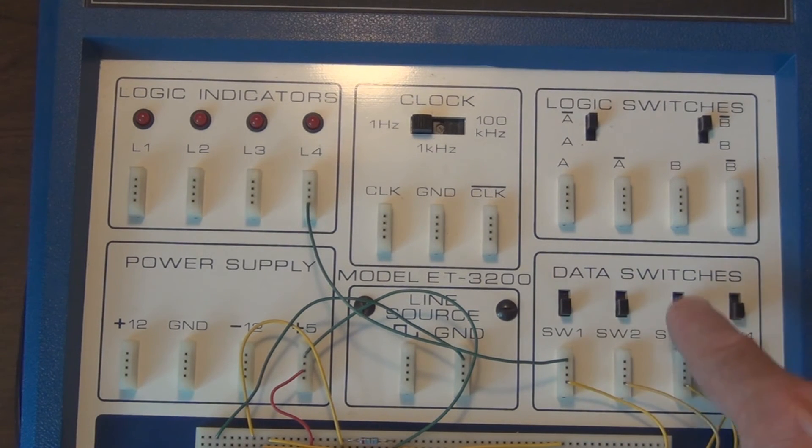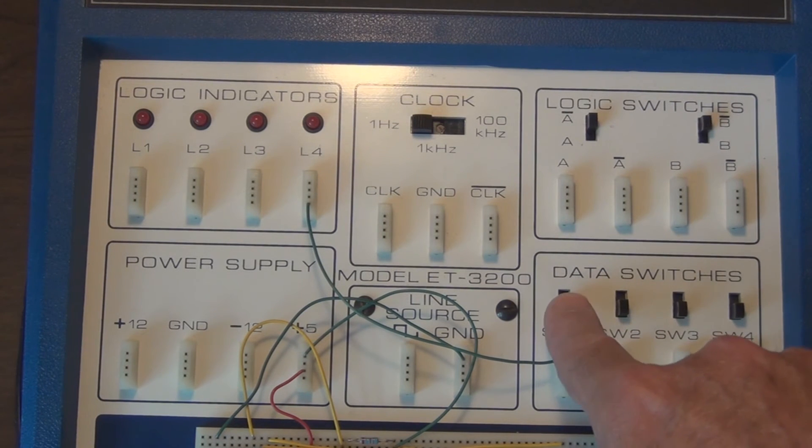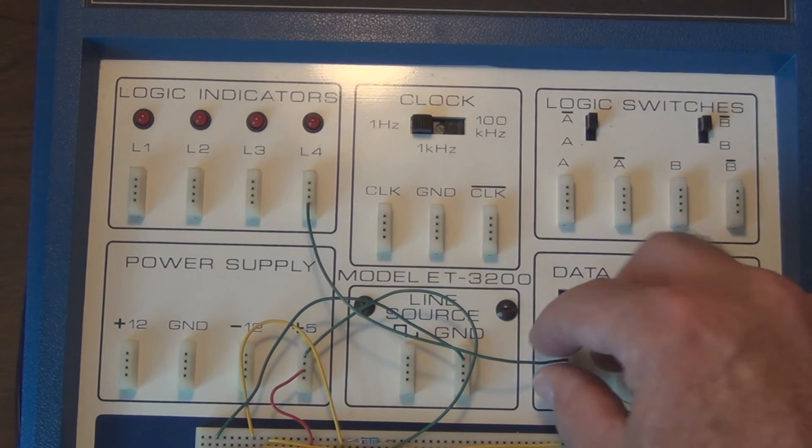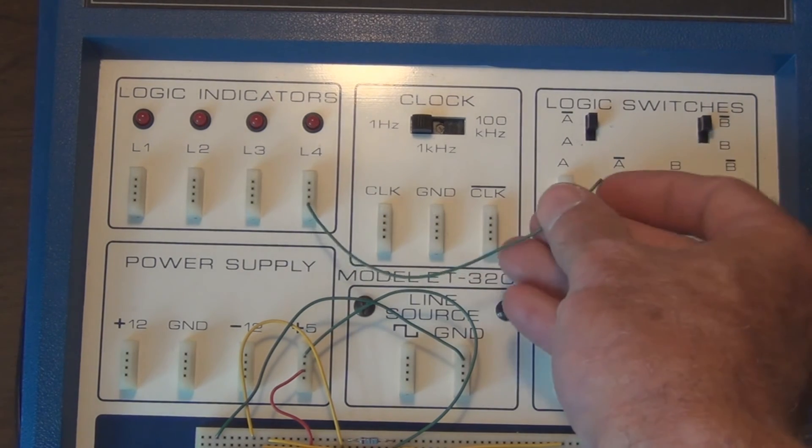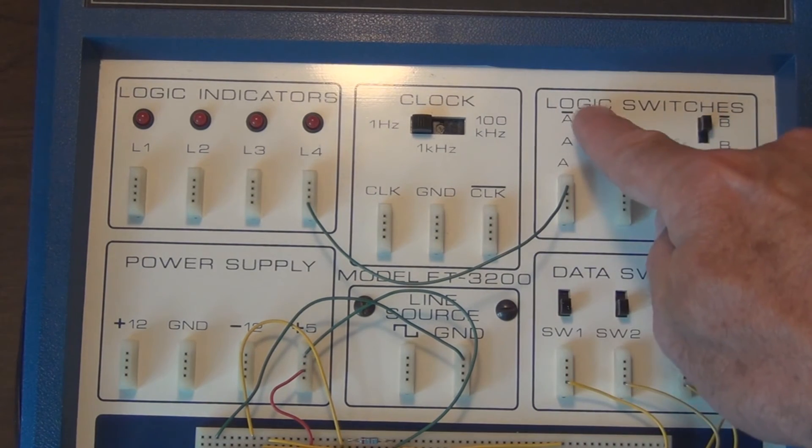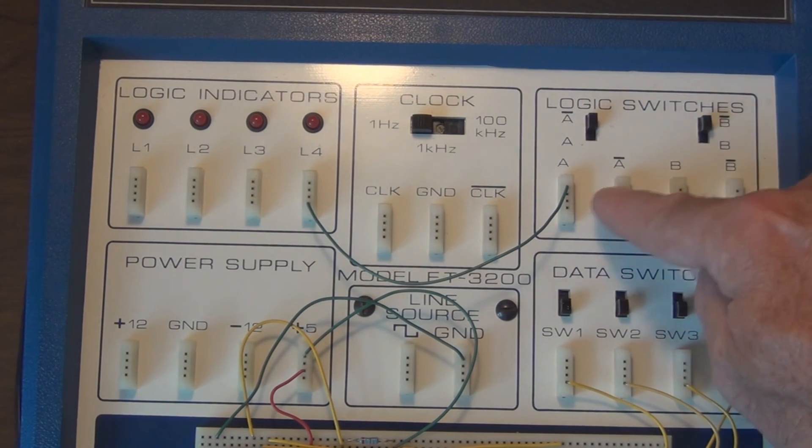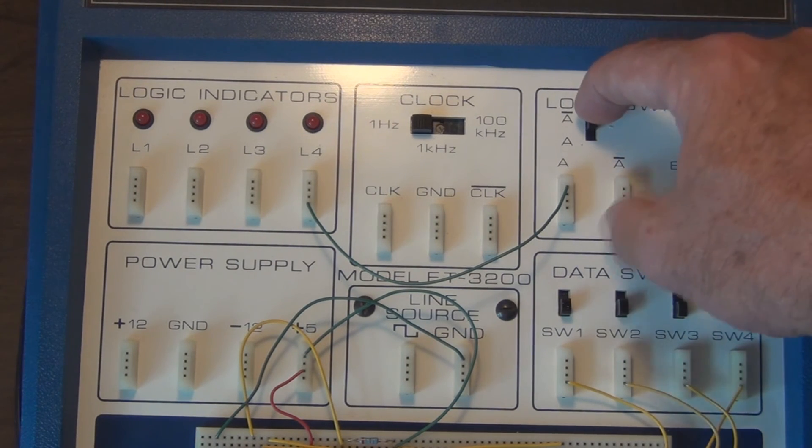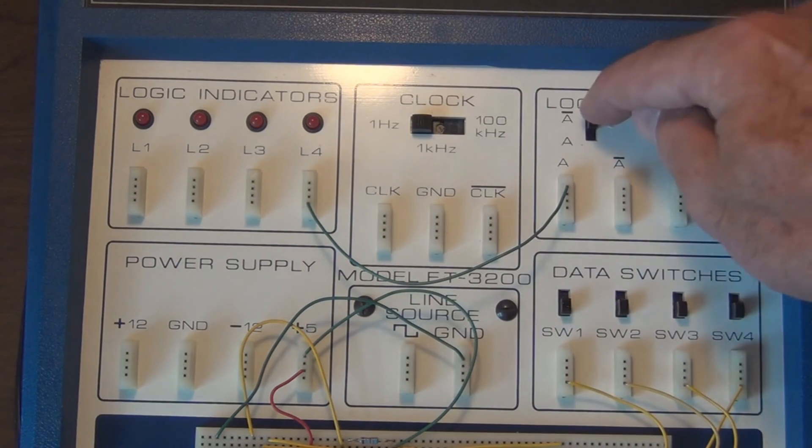You can manually control four switches here, each one representing a binary bit, so that works. And to demonstrate here, logic switches—this is A-not, so you can see here when I switch to A, this will light up.